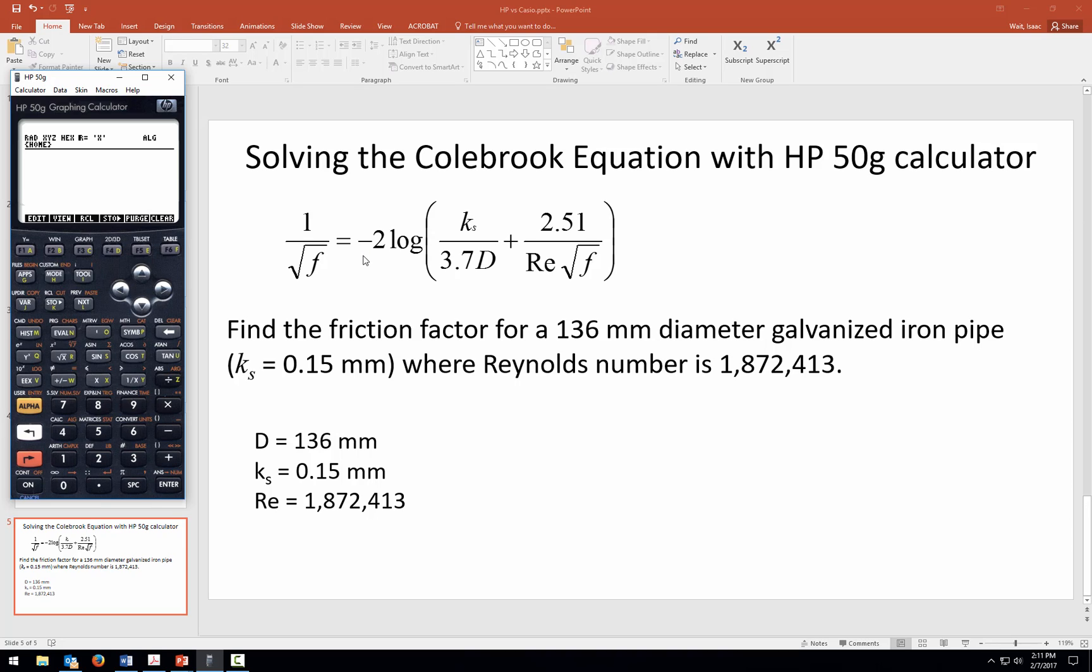These are some flow conditions from a previous example where we have a pipe with a diameter of 136 millimeters. It's galvanized iron, which tells us the k_s value, which is the equivalent sand roughness for the material. The flow conditions—the velocity, diameter, and kinematic viscosity—are yielding a Reynolds number of 1.8 million.